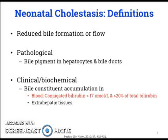Jaundice usually only presents, however, when the bilirubin is greater than 50 micromoles per liter, thus is not always clinically as useful and may not be detected until the bilirubin has significantly increased.